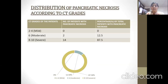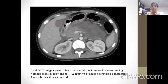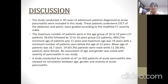Peripancreatic necrosis was seen in 87.5% of the severe cases and 12.5% of the moderate cases. A CT scan image shows a bulky pancreas with non-enhancing necrotic areas in the body and tail of the pancreas, suggesting necrotizing pancreatitis. In the discussion, the study conducted on 30 adolescent patients diagnosed with acute pancreatitis were included; these patients underwent CECT of abdomen and pelvis and were graded according to the Modified CT Severity Index.